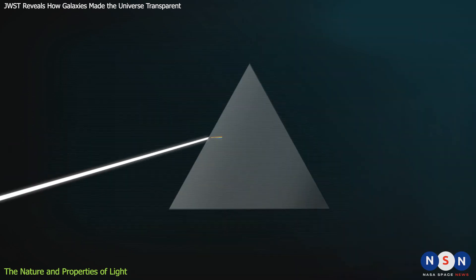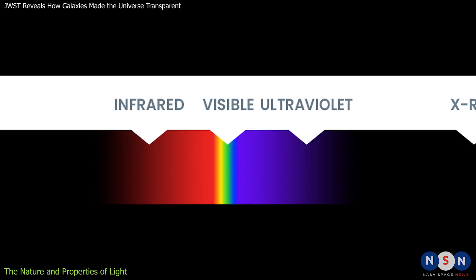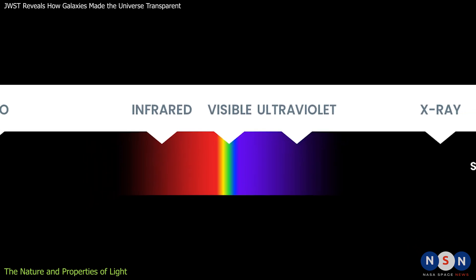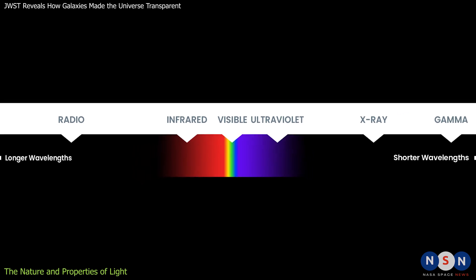The range of wavelengths that we can see with our eyes is called the visible spectrum and it goes from violet to red. However, there are many other types of light that are invisible to us, such as infrared, ultraviolet, X-ray, or gamma ray.